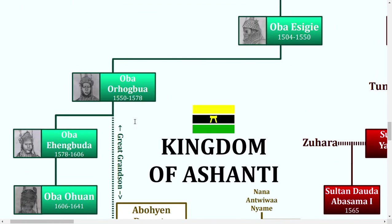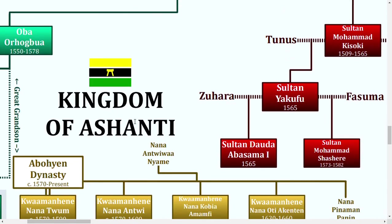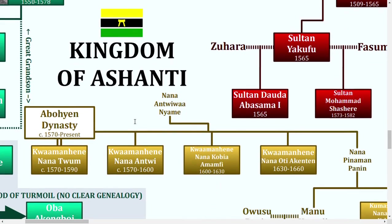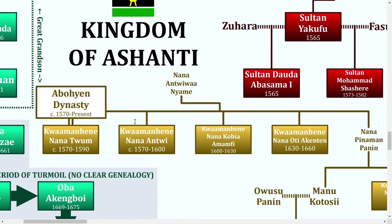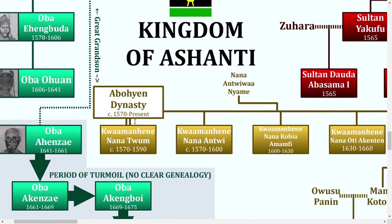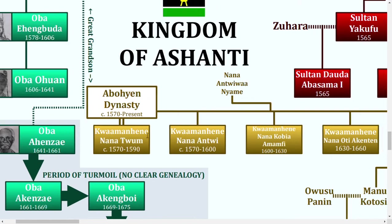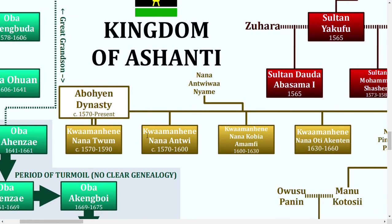Moving on, we're going to be talking about the Kingdom of Ashanti. The Kingdom of Ashanti, located in Ghana, was first established in 1570 by this guy, Nana Twum, who founded the Aboyan Dynasty, which still exists to this day. Back then it was actually known as the Kwaman State, and he took the title of Kwaman Hene. It passed through some of his brothers as well.